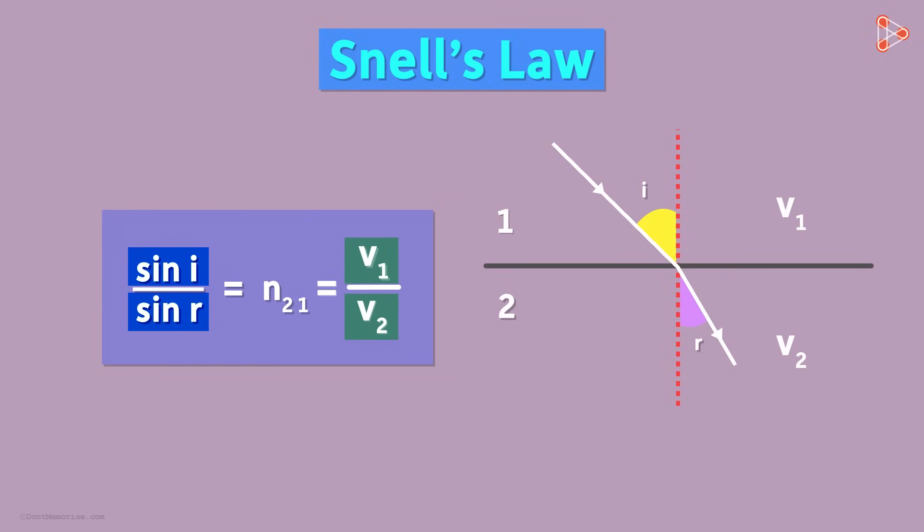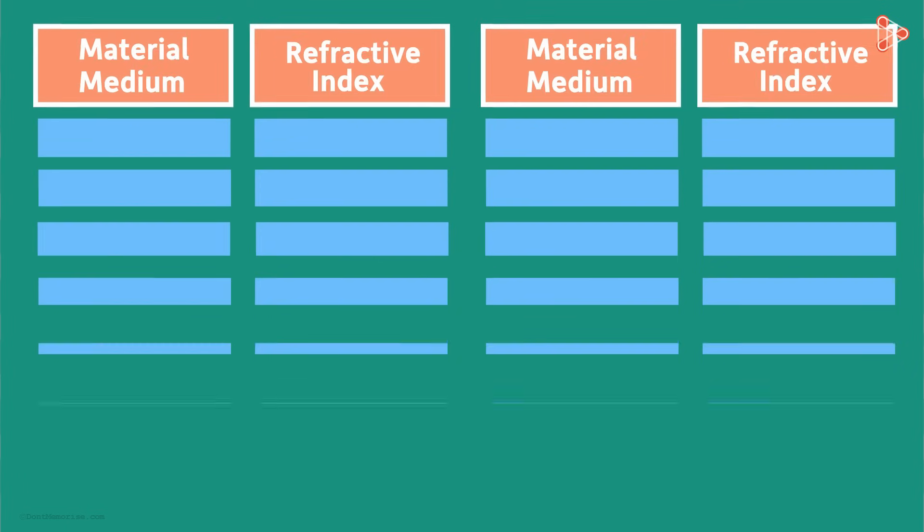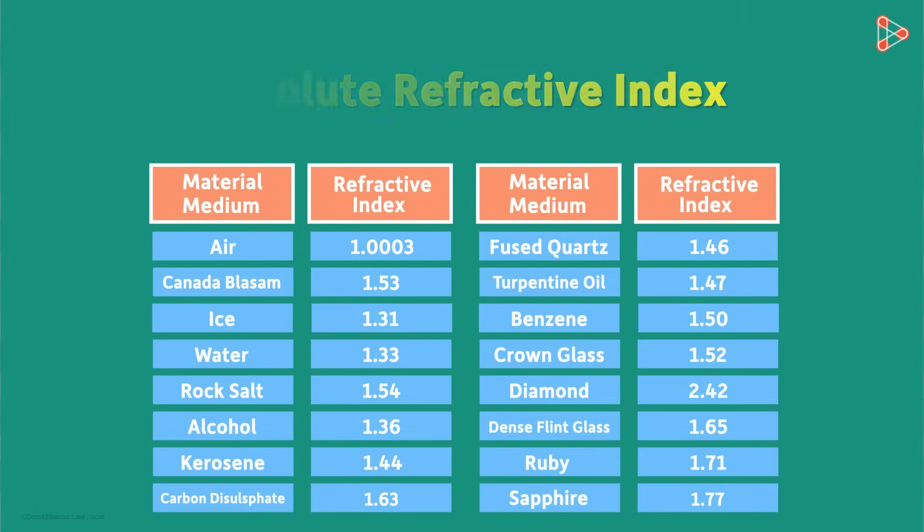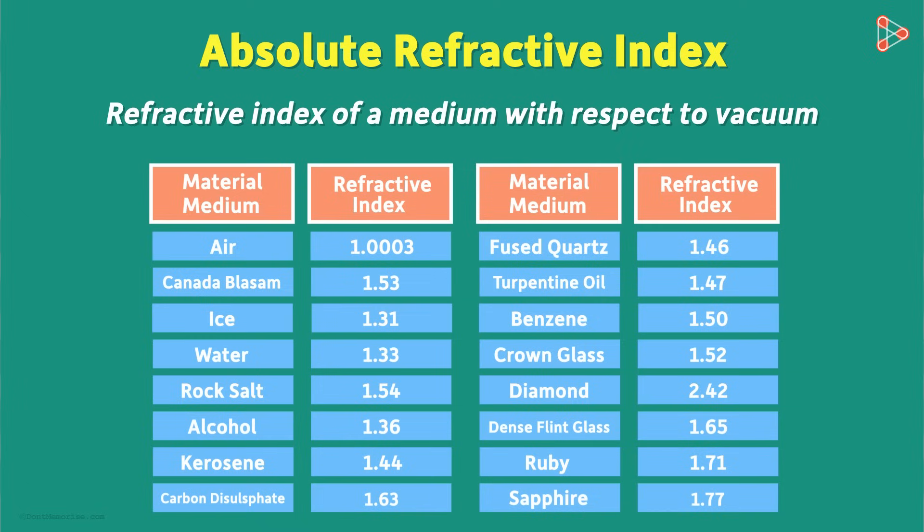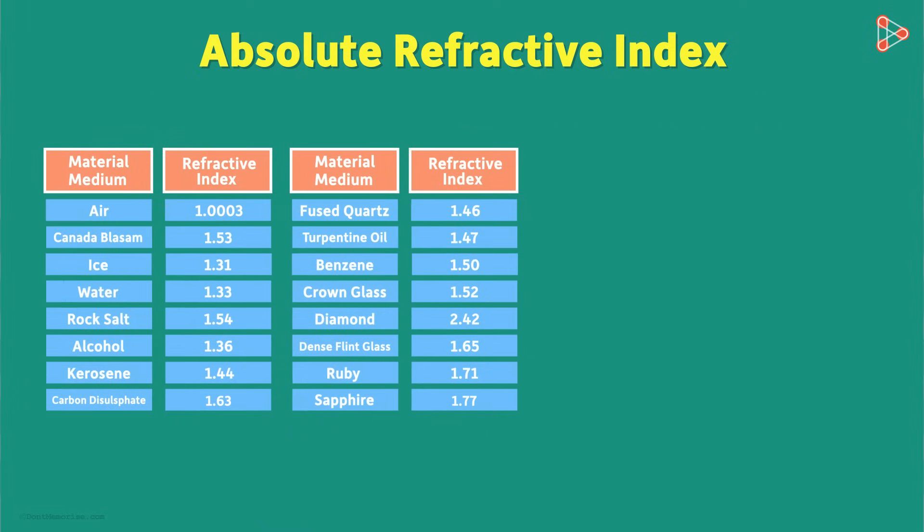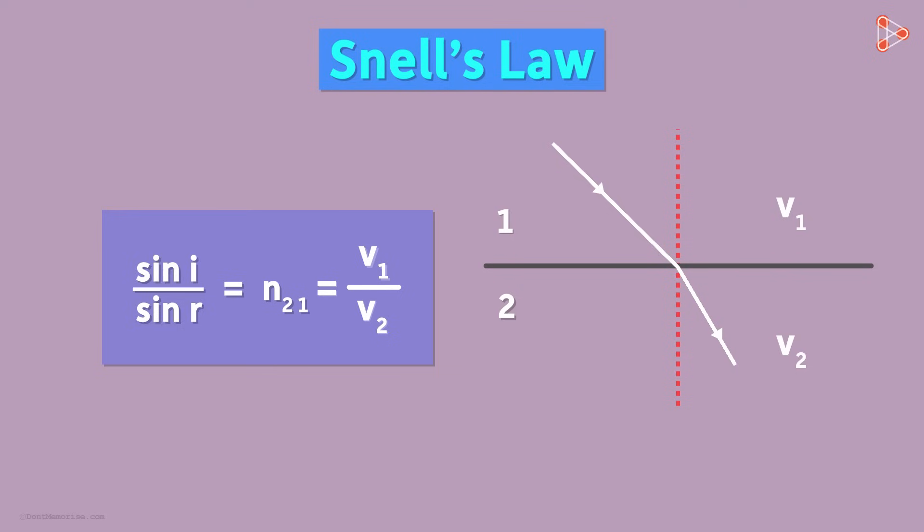There's yet another way to understand this. We may want to understand the ratio in terms of the absolute refractive indices of the medium. Absolute refractive index, if you remember, is the refractive index of a medium with respect to vacuum. For instance, if the refractive medium is water, then it's written like this. So can we find this ratio in terms of N1 and N2?